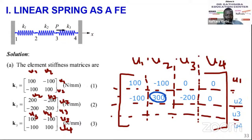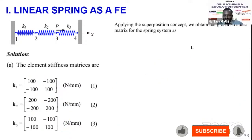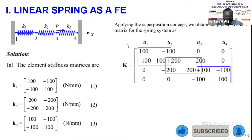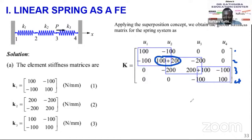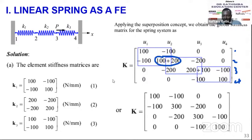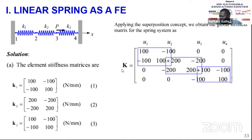Continuing with this superposition principle, you can complete the full global stiffness matrix. Superposition occurs at shared nodes — node 2 is a shared node and node 3 is a shared node, which is why u2-u2 and u3-u3 have added contributions. All other nodes are not interconnected. This gives us the assembled global stiffness matrix — simply add the values at shared degrees of freedom.